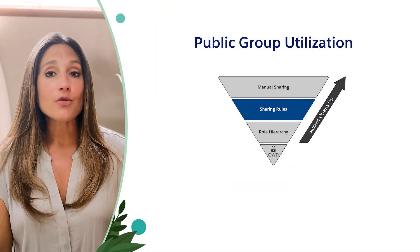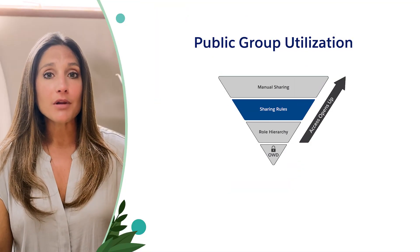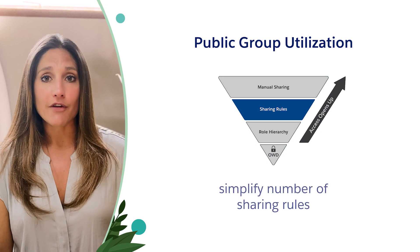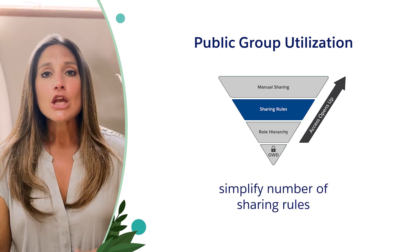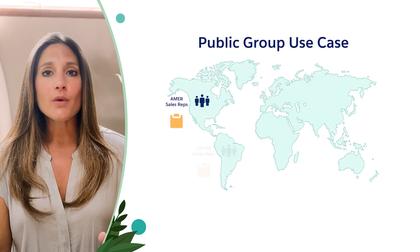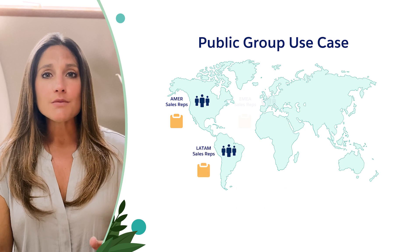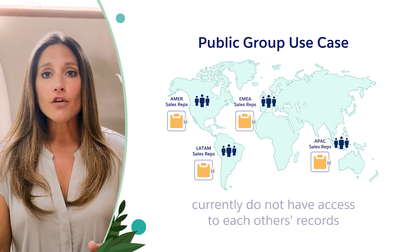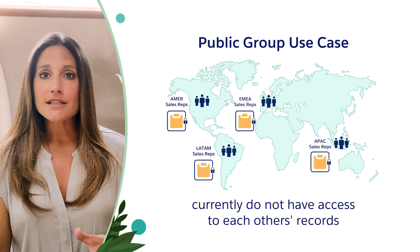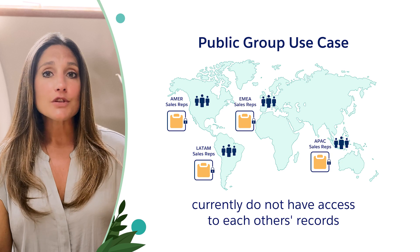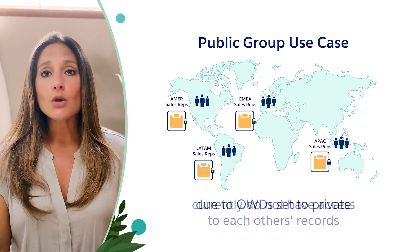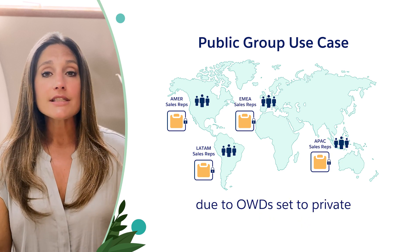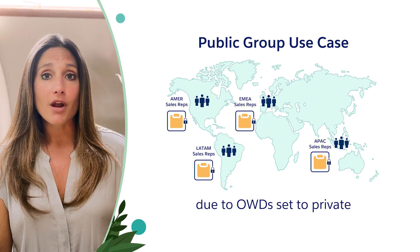A common way admins would create and use public groups is to simplify the creation of sharing roles. For example, let's say that we have four teams of sales reps globally by region. Currently, they do not have access into each other's opportunity records because the organization-wide defaults, or OWDs, have been set to private.